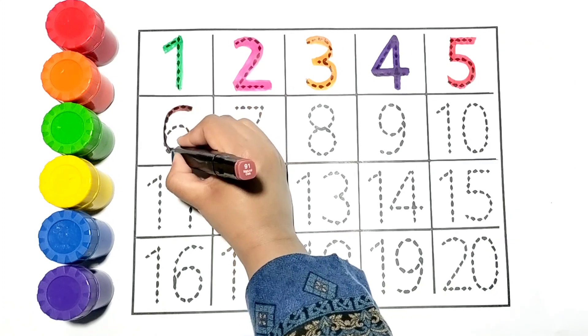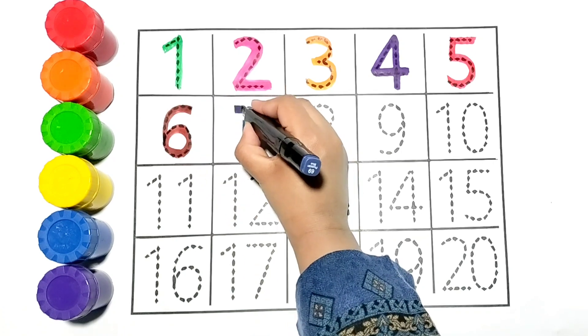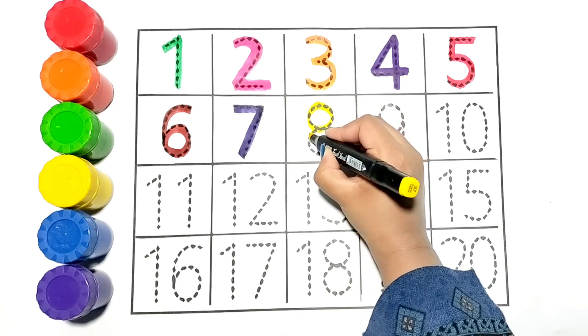Now I am writing 6. 6 is in brown color. 7. 7 is in blue color. Let's write 8 with yellow color.